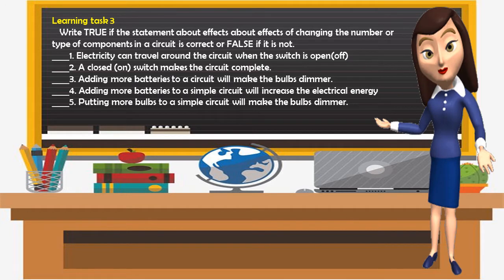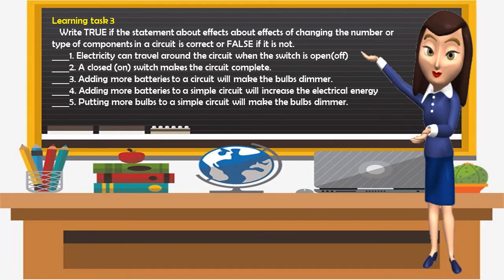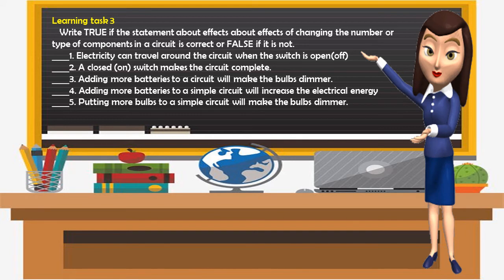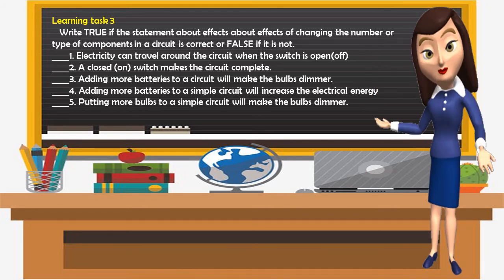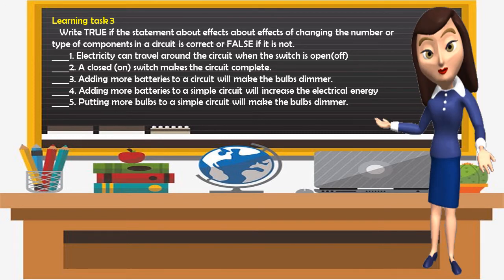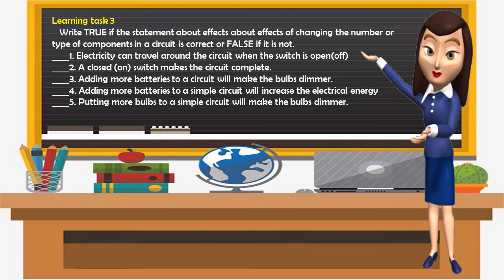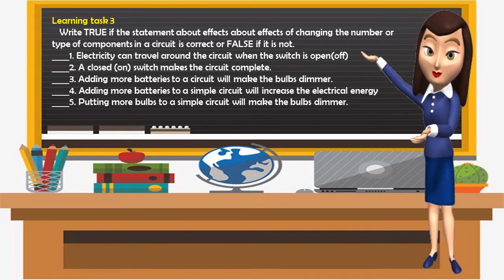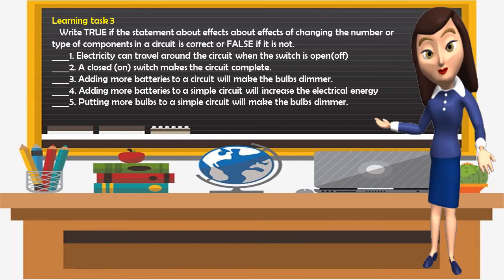Learning Task 3 — write true if the statement about effects of changing the number or type of components in a circuit is correct, or false if it is not. Number 1: electricity can travel around the circuit when the switch is open or off. Number 2: a closed or on switch makes the circuit complete. Number 3: adding more batteries to a circuit will make the bulb dimmer. Number 4: adding more batteries to a simple circuit will increase the electrical energy. Number 5: putting more bulbs in a simple circuit will make the bulb dimmer.